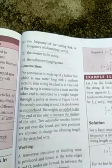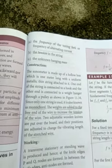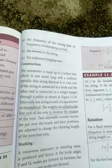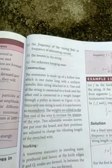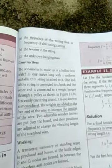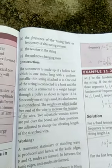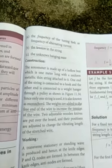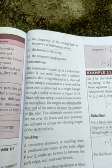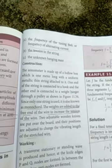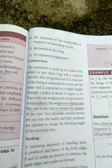Whenever they added the weight, it increases to the tension, increasing the tension to the wire. Two adjustable wooden knives are put over the board and their position are adjusted to change the vibrating length of the stretched wire.